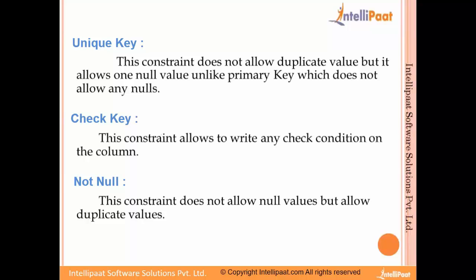The not null constraint does not allow null values but does allow duplicate values. We normally use not null when we don't want any null values to be inserted in a column. There can be duplicate values, but the column will never be null. So those are basically the five constraints we just talked about: primary key, foreign key, unique key, check constraint, and not null.